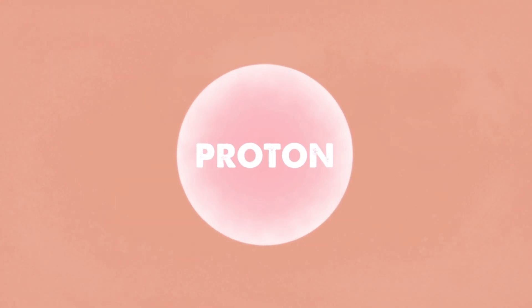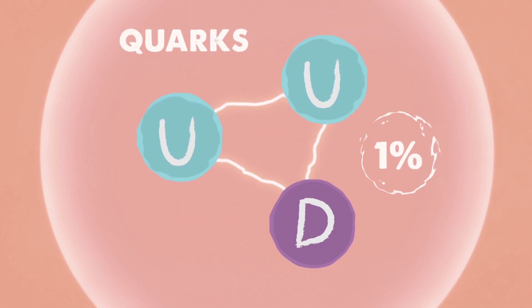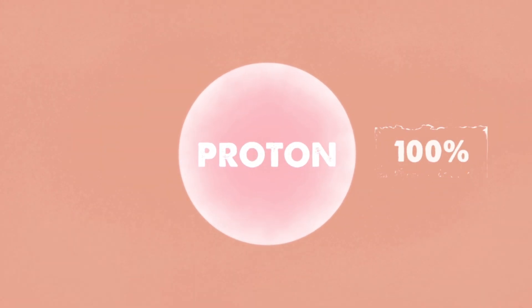this simple rule breaks down when applied to protons. See, a proton is made of quarks and their mass is roughly 1% of a proton's overall mass. But where does the rest of the proton's mass come from then?